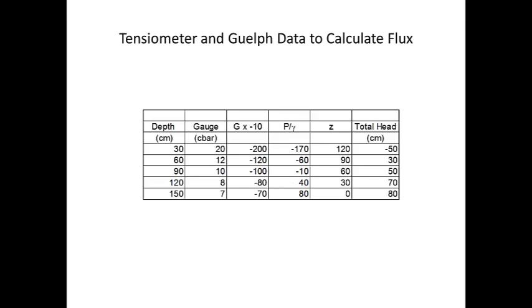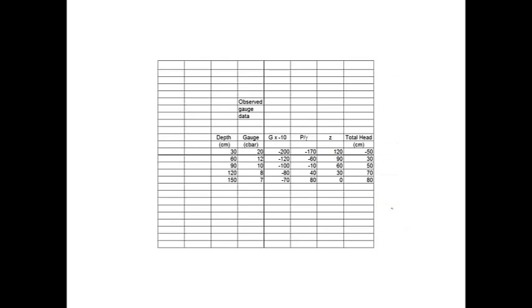The field data from tensiometers and the Guelph permeameter can be combined to calculate flux in the vadose zone. In order to start, I'm going to assume that we have data from five tensiometers shown here in this column at different depths shown here. This table is the way to analyze those data to get the total head. This analysis is covered in a different video, so I'm going to assume that you know how to fill out this table and calculate the total head.